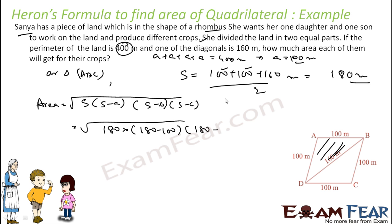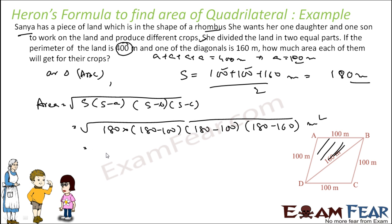S minus B is 180 minus 100, and S minus C is 180 minus 160. You solve this — the unit will be meter square — and you get 4800 meter square. That is the area of each of these triangular plots.